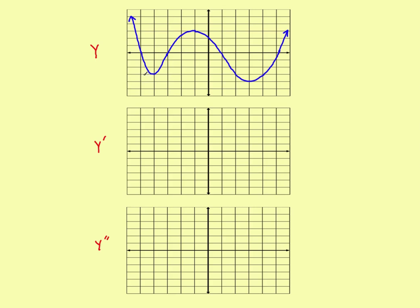To begin sketching the first derivative, we find where it crosses the x-axis — that occurs wherever the original graph has a horizontal tangent. I've got a horizontal tangent here, so the slope there is zero; I'll come straight down and the first derivative graph goes through zero there. There's another horizontal tangent up here — slope is zero, come straight down, the first derivative crosses the x-axis there. And one more horizontal tangent over here — slope is zero, so the derivative goes through zero there as well.